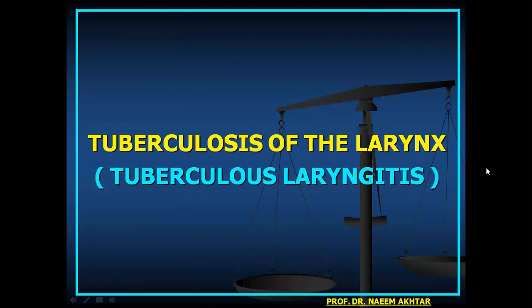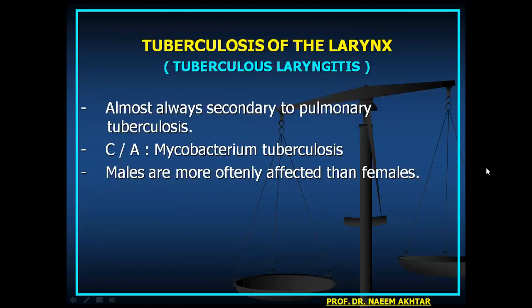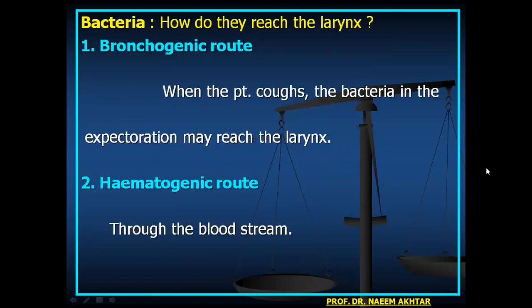Tuberculosis of the larynx (tuberculous laryngitis) is almost always secondary to pulmonary tuberculosis, caused by Mycobacterium tuberculosis. Males are more often affected than females. Bacteria reach the larynx via two routes: the bronchogenic route — bacteria in expectoration reach the larynx during coughing — and the hematogenic route through the bloodstream, which is rare.